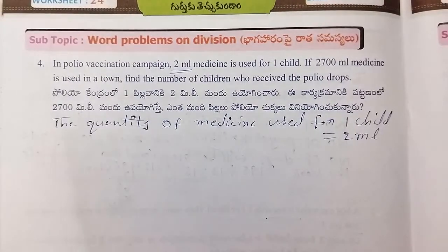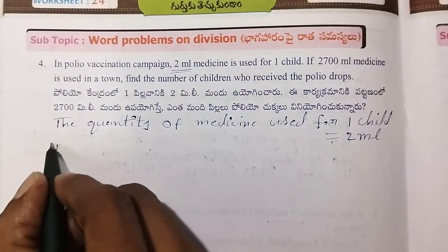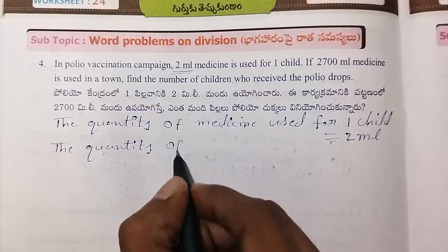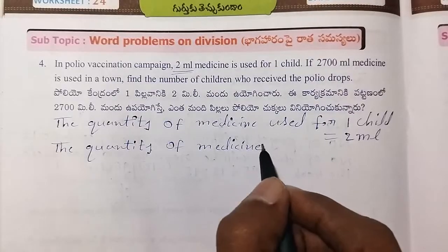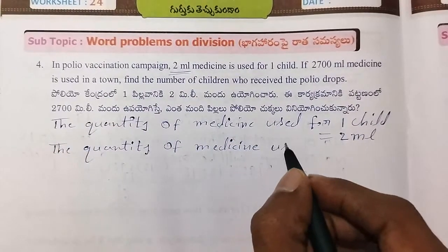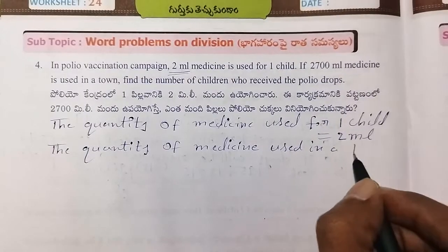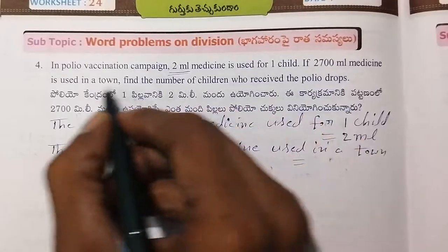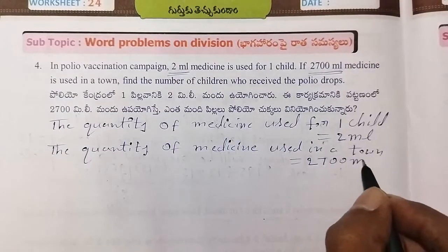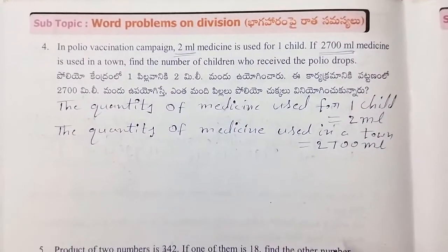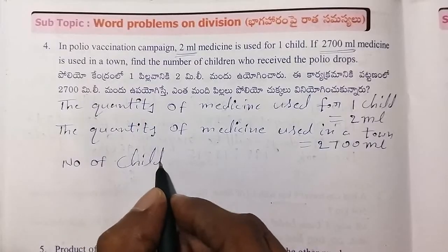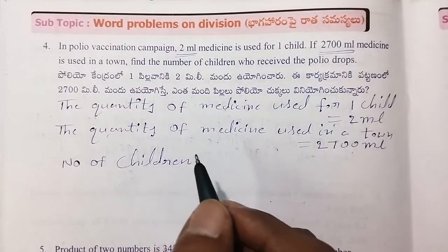Next, the quantity of medicine available is 2700 ml. Number of children who received the polio drops equals 2700 divided by 2.